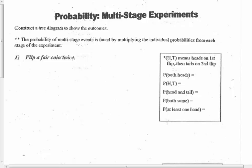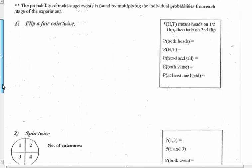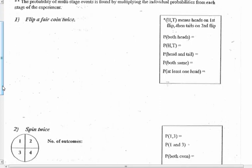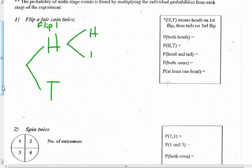Now on to page 17. The probability of multi-stage events is found by multiplying the individual probabilities from each stage of the experiment — that multiplication rule from page 9 and yesterday's video. Flip a fair coin twice. I know I can get either heads or tails on a coin. So for flip number one I can get heads or tails, and for flip number two I can also get heads or tails. Don't forget your headings.